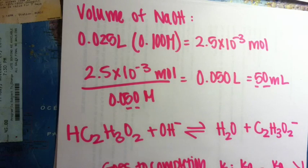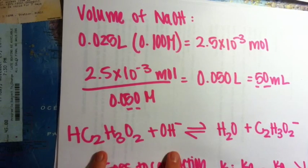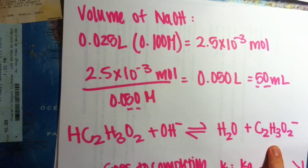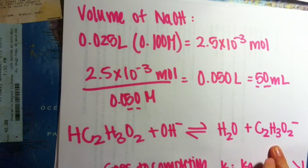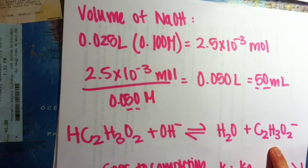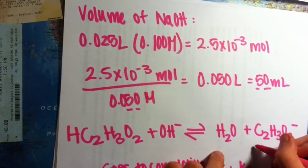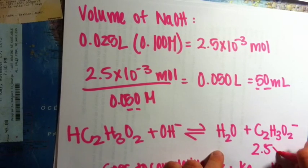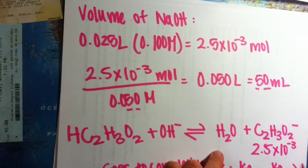And if the same number of moles react, there will be the same number of moles of acetate ions produced, which is 2.5 times 10 to the negative third moles.